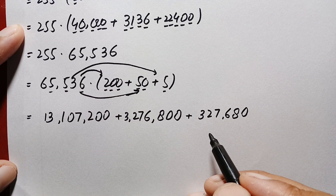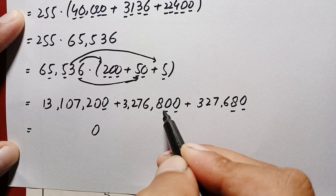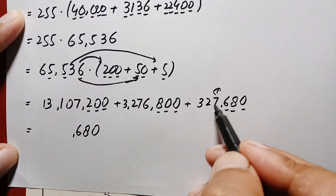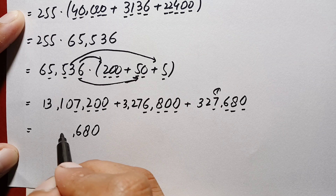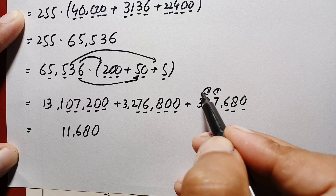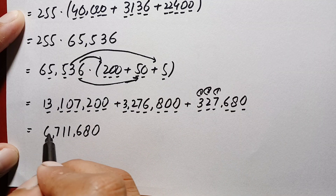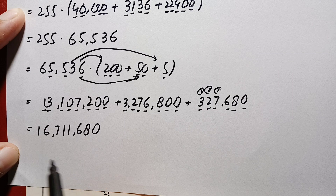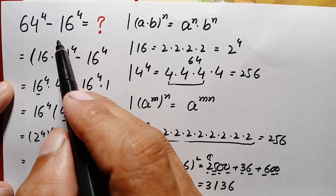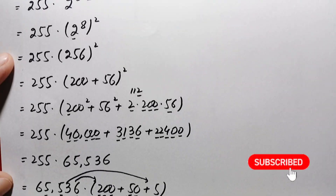Adding the three partial products starting from the ones position: 0, 8, 6... carrying through, the sum of these numbers gives 16 million 711. So finally this is our answer — the value of this beautiful simplification math problem. Don't forget to subscribe to my YouTube channel for more interesting step-by-step math solutions. Thanks for watching.